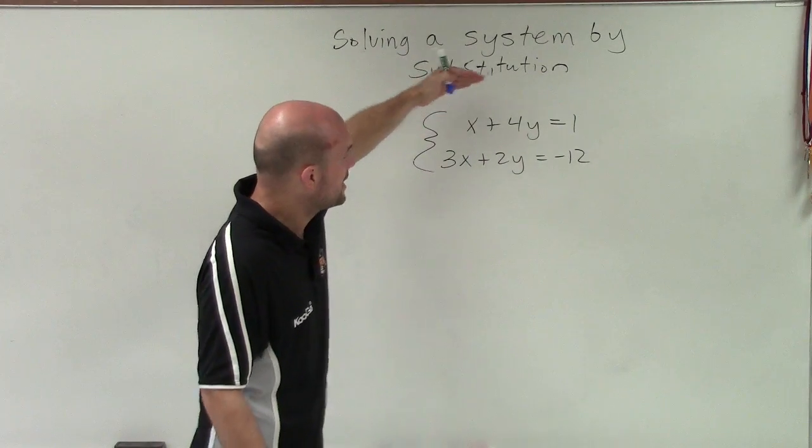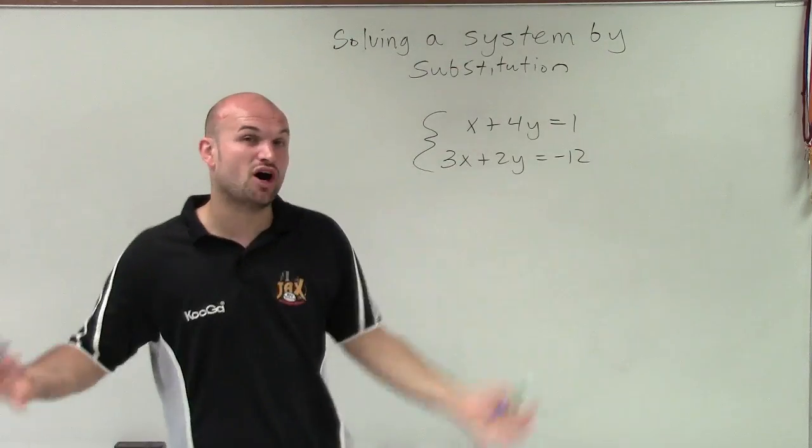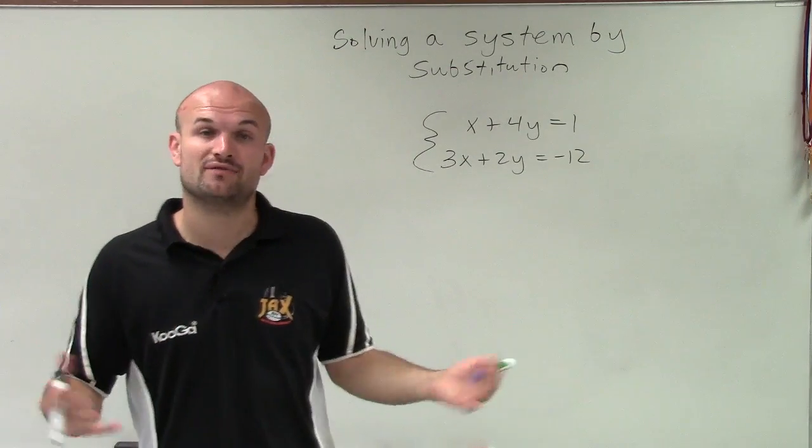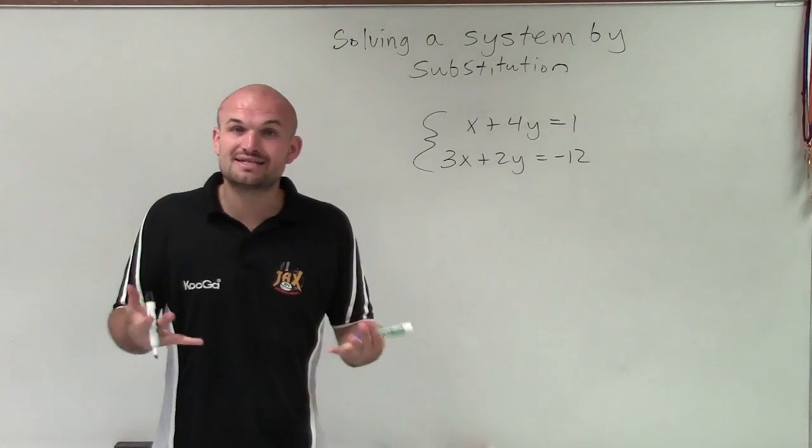But I look at this, and I notice that I do not have a variable x or y that's all by itself, right? That's on one side of the equation all by itself. So what I need to do is isolate a variable.